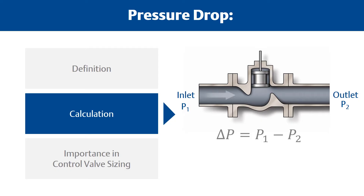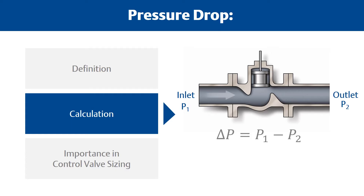Inlet or upstream pressure is shown as P1, and outlet or downstream pressure is shown as P2. P1 is measured two pipe diameters upstream of the valve, and P2 is measured six pipe diameters downstream of the valve. Your process or instrumentation department will provide these variables. To calculate the pressure drop across a valve, subtract the outlet pressure from the inlet pressure.